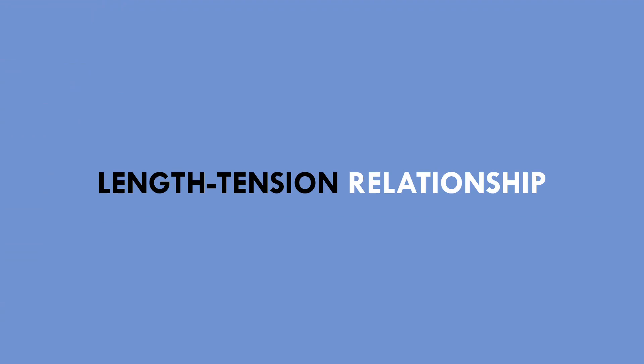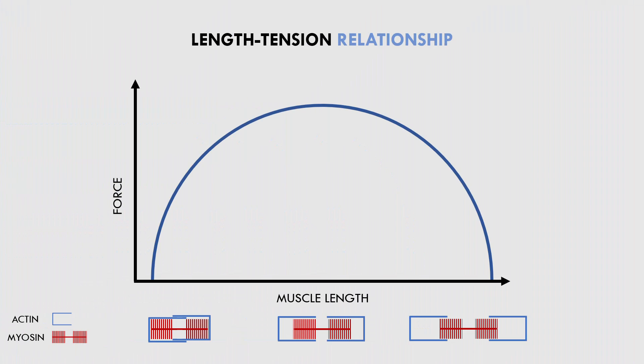The other factor that influences tension curves is the length-tension relationship. This is a relationship between force production and overlap of the actin-myosin cross-bridging. When the muscle is in a fully shortened position, there is a lot of overlap of the actin and myosin filaments of the muscle fibres, meaning there are fewer sites for cross-bridges to form and force production will be inhibited. When the muscle is at a moderate length, there is optimal overlap of the actin and myosin filaments.